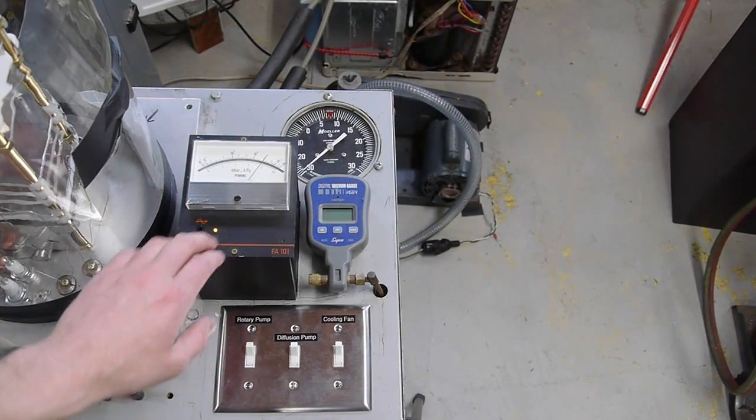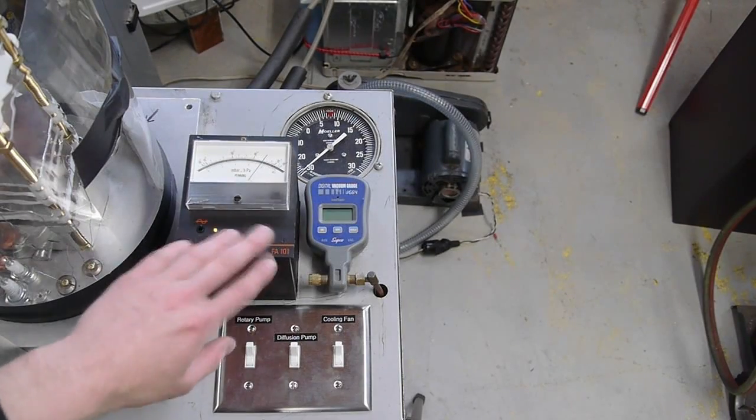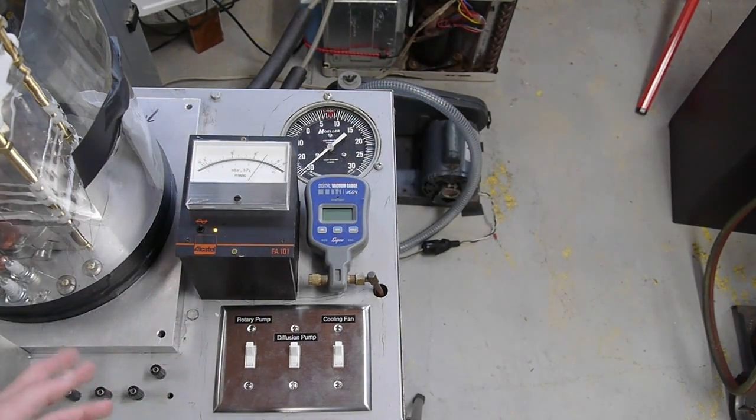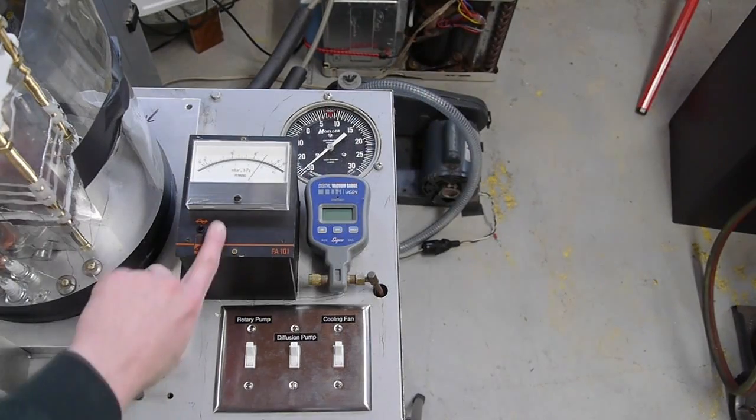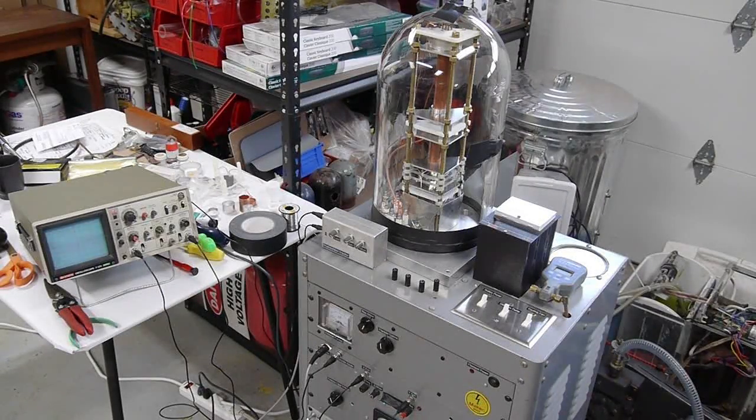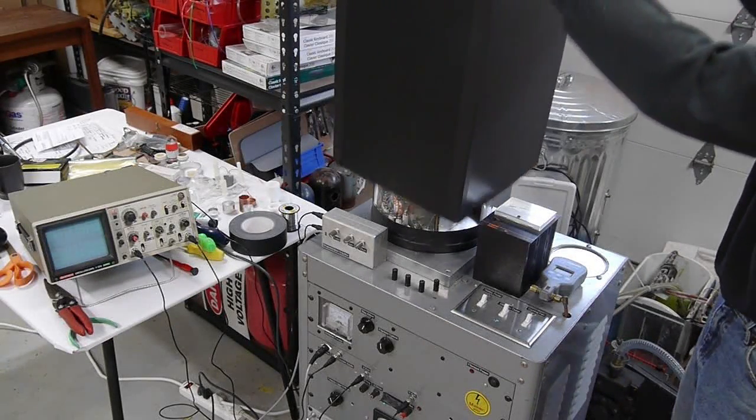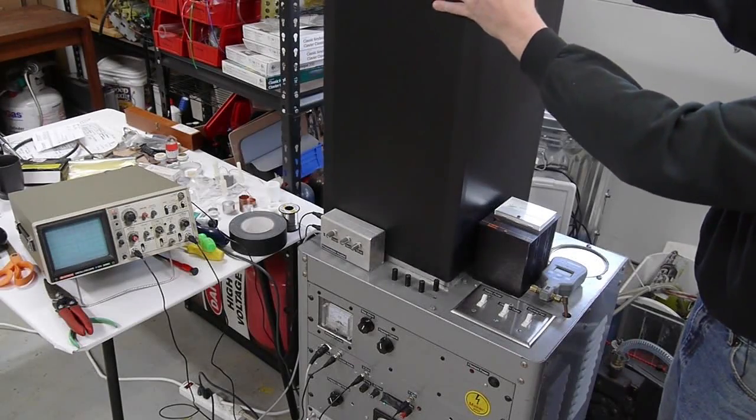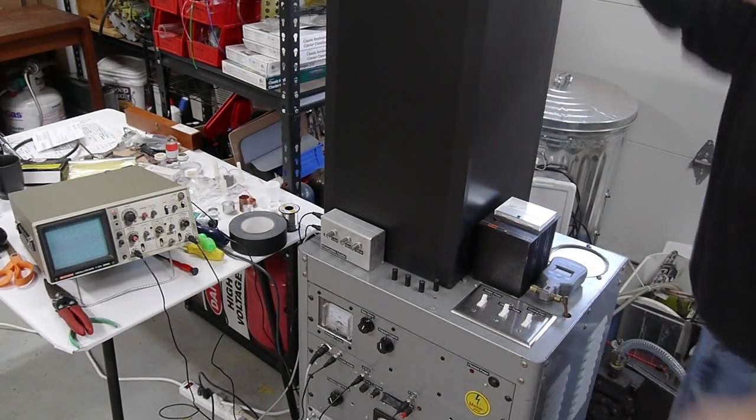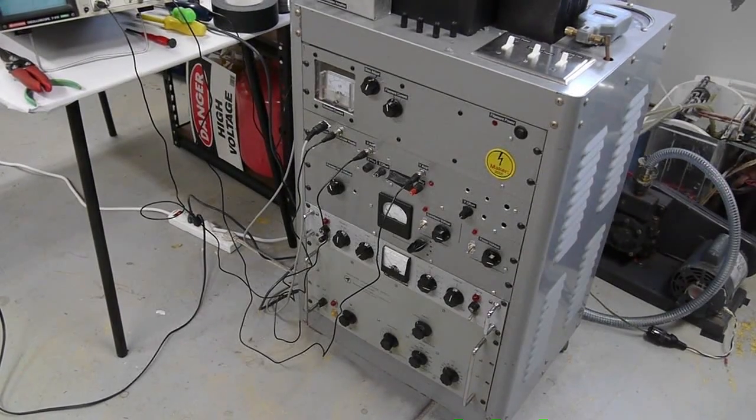The penning gauge is now reading 2 times 10 to the minus 4 millibar, which is pretty close to 2 times 10 to the negative 4 torr. So that's good enough. So I'm going to switch this off to avoid causing interference later. The next step is to put the light tight shroud on the microscope. What we're going to be doing is light sensitive. So I'm going to put this Coroplast black plastic to cover that up.